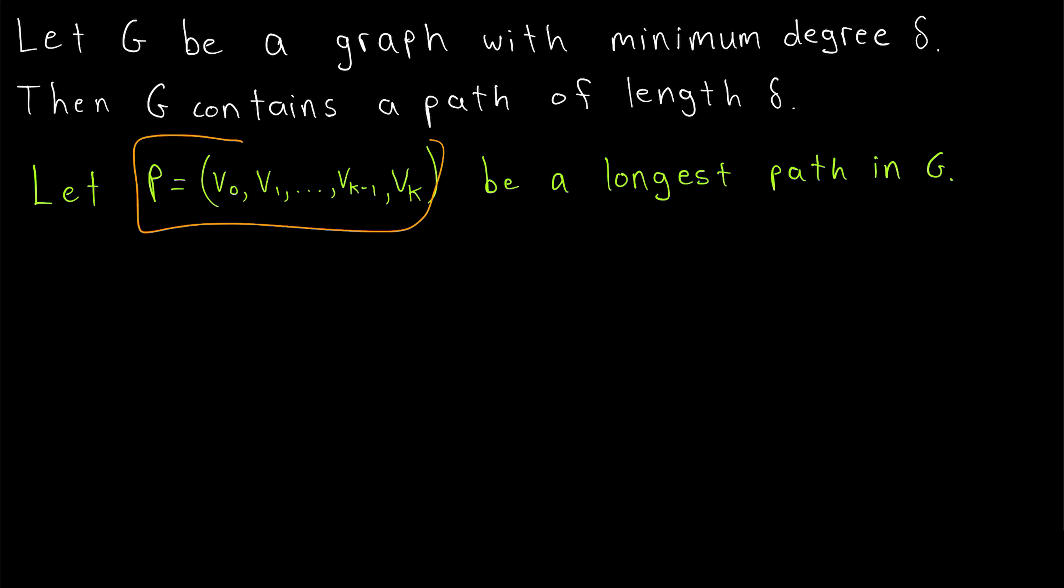First, what is the length of this path P just based on how we've labeled its vertices? Well, from v0 to v1 is one edge, from v1 to v2 is two edges, and so on, all the way up to vk minus one is k minus one edges, and then when we get to vk, that's a total of k edges. So the length of our longest path P is k.